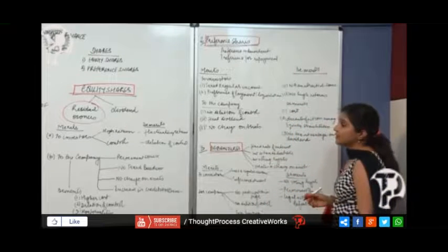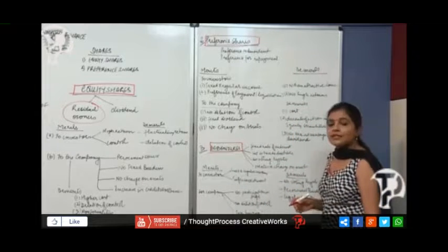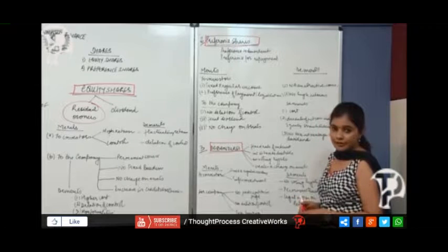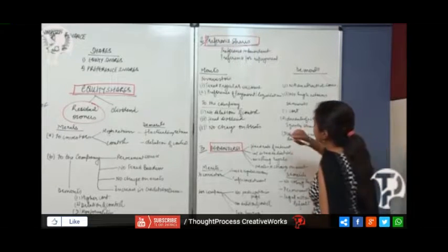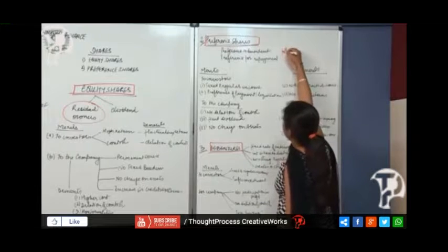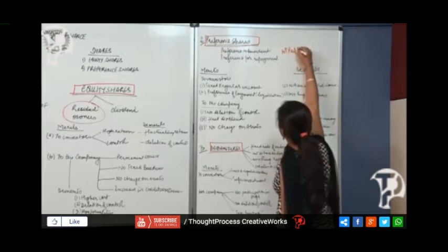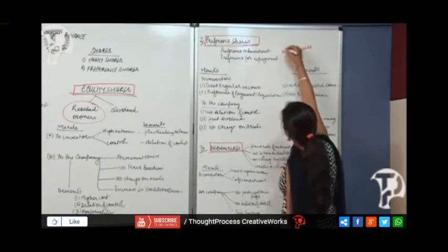And another thing: preference shareholders, they always get dividend, they get a fixed rate of dividend. You will always see preference shares written like this: 10 percent preference shares. 10 percent preference shares meaning...